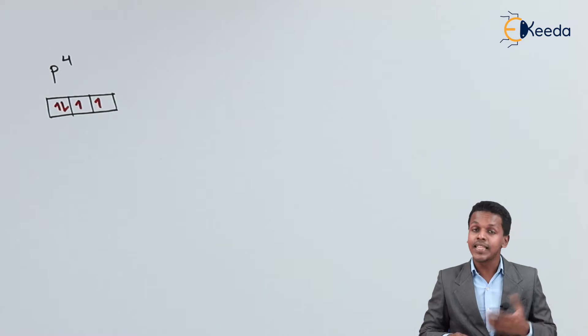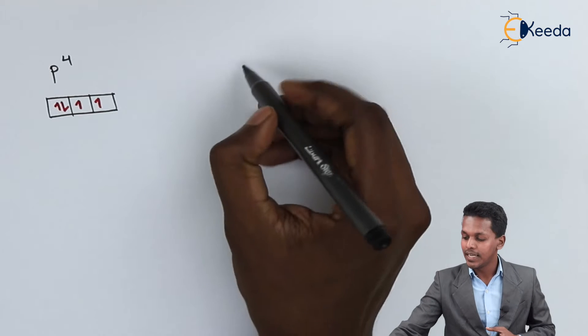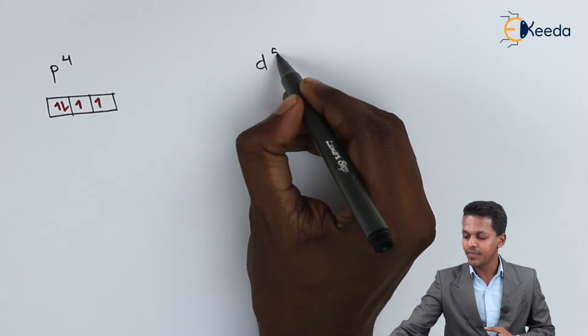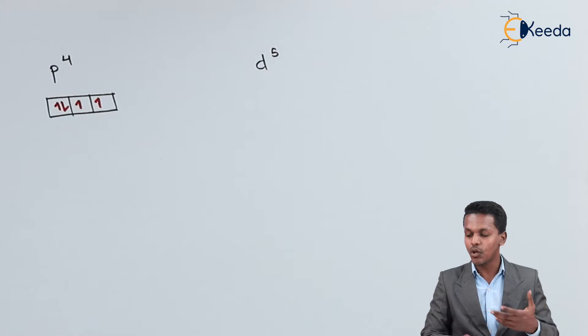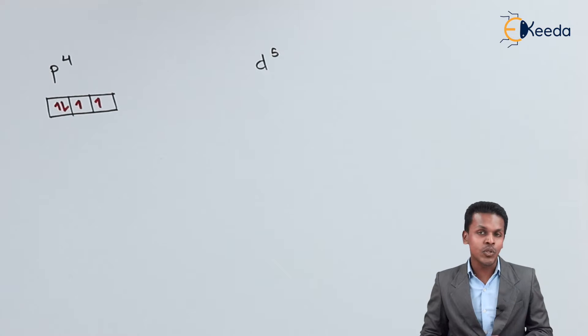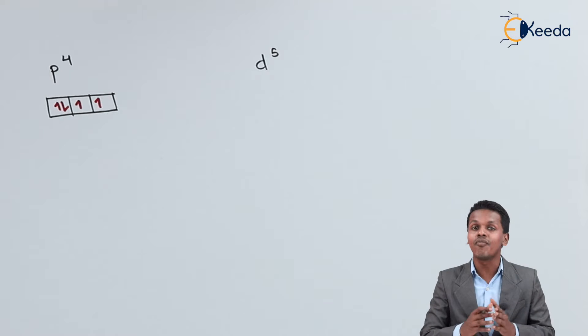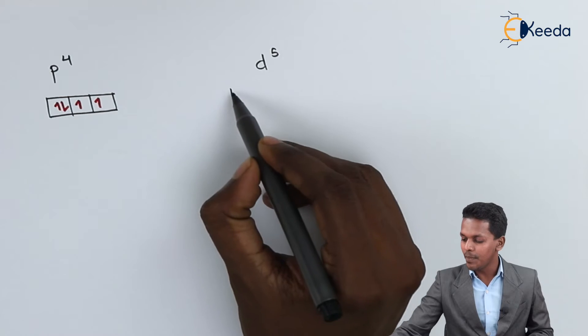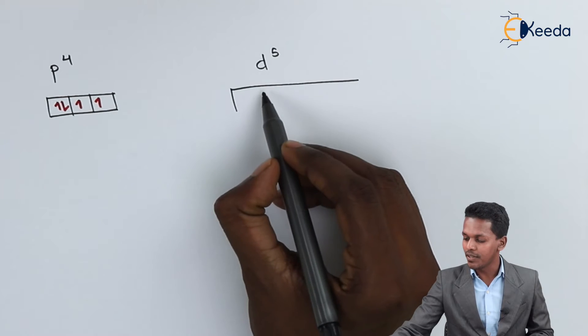Suppose if we are considering another example. Suppose here I am talking about d^5. Suppose if this is the orbital that we have. And the d subshell consists of 5 electrons. As we also know that the d subshell consists of 5 orbitals.